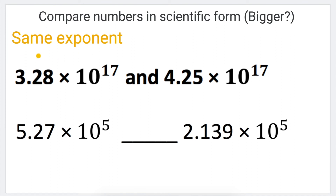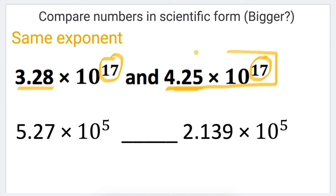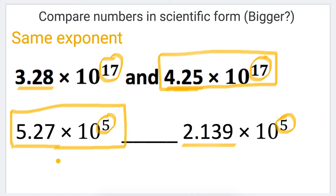In the final scenario, we look at comparing scientific numbers when we have the same exponent — both positive or both negative with the exact same value. In this example, we have 3.28 times 10 to the power of positive 17 and 4.25 times 10 to the power of positive 17. Since the exponents are the same, we rely on the decimal part: 4.25 is bigger than 3.28, which means 4.25 times 10 to the power of 17 is the bigger scientific number. In the second example, the exponents are again the same, so comparing the decimals: 5.27 is clearly bigger than 2.139, so the first scientific number is bigger.